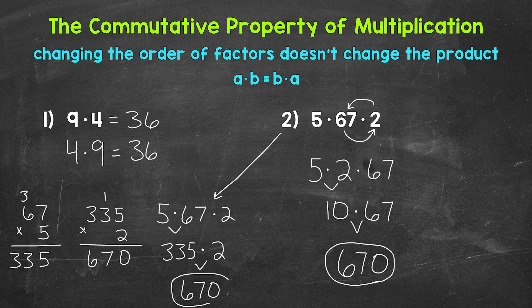So you can see that we get 670 that way as well. So there you have it, there's an explanation of the commutative property of multiplication. Just remember, changing the order of factors, the numbers being multiplied, doesn't change the product, the answer.